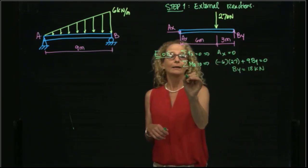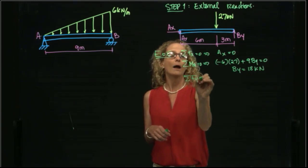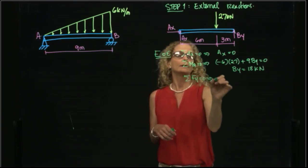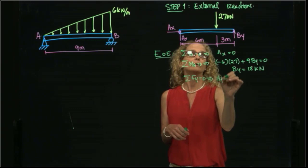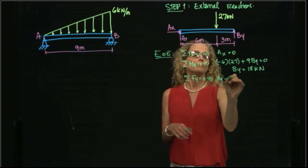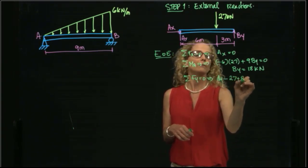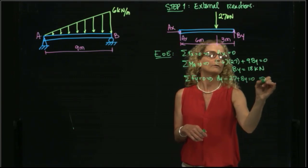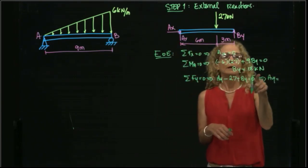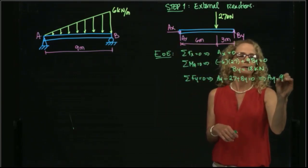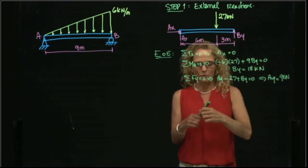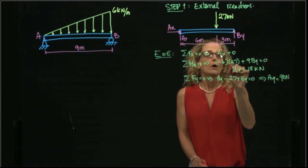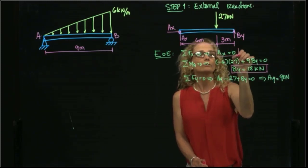BY is equal to 18 kilonewtons. And then I add forces in Y, and I get that AY minus 27 plus BY equals 0. Therefore, AY is equal to 9 kilonewtons. So we found our external reactions.